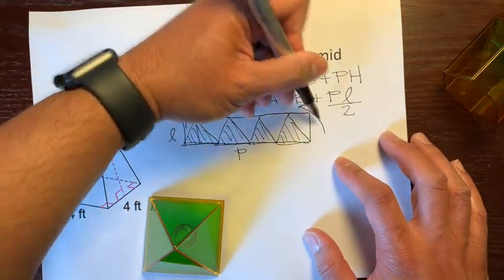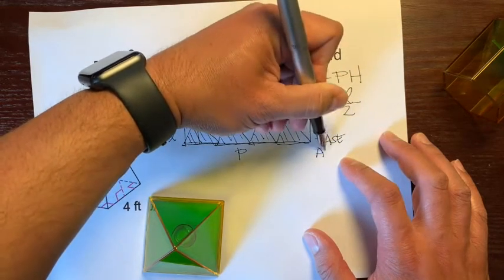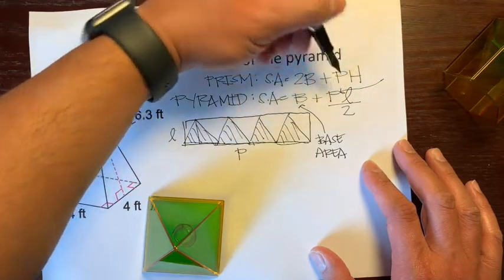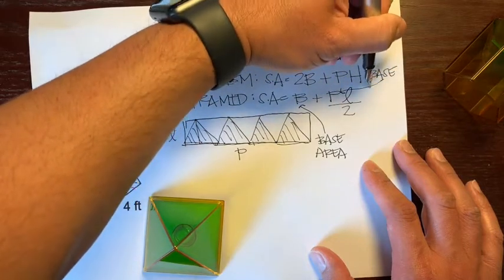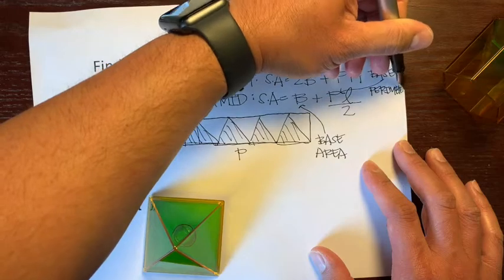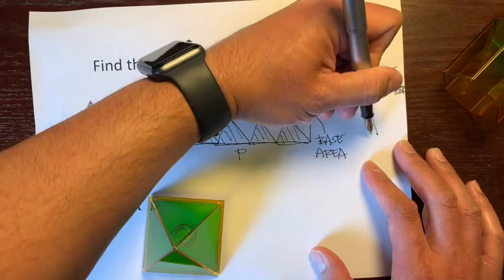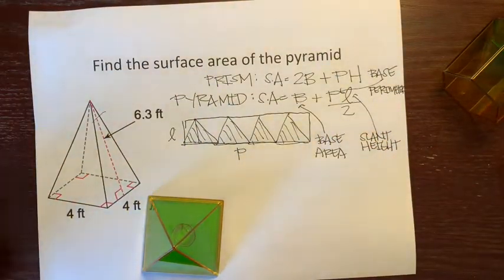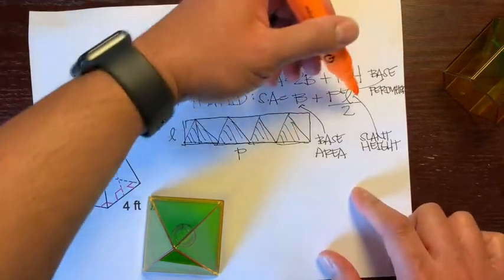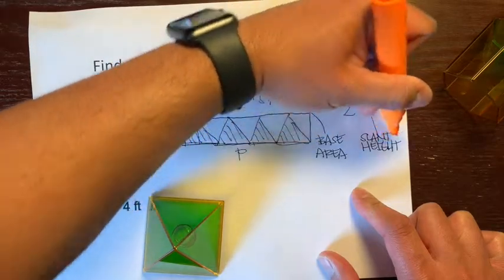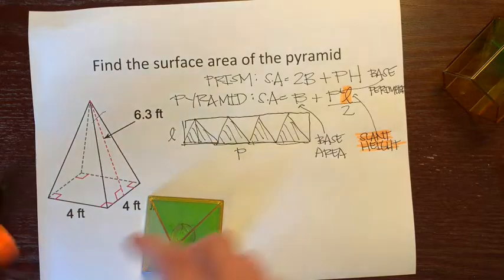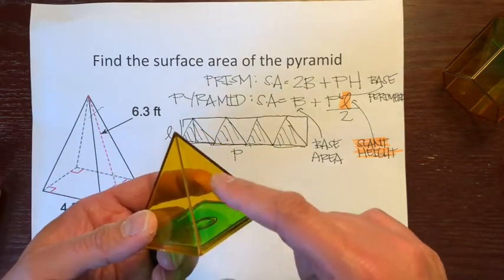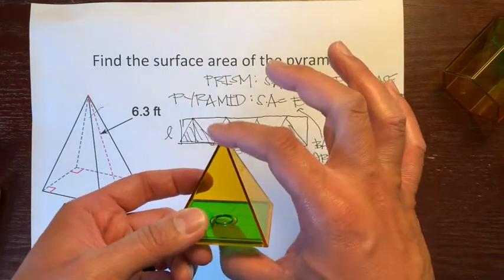So there's your formula for the surface area of a pyramid: one base area plus the base perimeter times the slant height over two, because these are all triangles. Write this in your notebooks and make a power card on it and memorize it. So this is base area, this is base perimeter, and this right here is the slant height. Make sure you use the slant height — the height that is on the surface — when finding the surface area, and not the inside height.